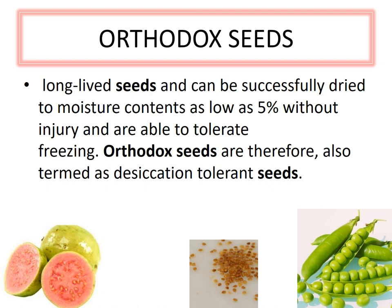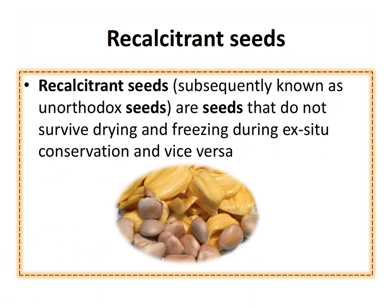Based on the lifespan of the seed under storage conditions, seeds can be classified as orthodox seeds and recalcitrant seeds. Orthodox seeds are long-lived and can be successfully dried to moisture contents as low as 5% without any injury and are able to tolerate freezing — they are also termed desiccation-tolerant seeds. Examples are guava seeds, tomato seeds, and peas. Recalcitrant seeds are quite the opposite: they cannot withstand high or low temperature, making ex situ conservation very difficult. Good examples are jackfruit seeds and mango seeds.